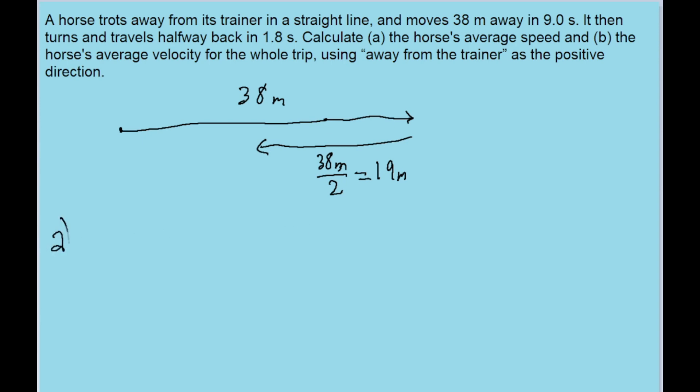Part A of the problem asks us to find the horse's average speed. So average speed is equal to total distance divided by the amount of time. Now the total distance in this case is going to be 38 meters plus the distance it travels when it turns around. So the total distance is 38 plus 19 meters, and the amount of time it travels, it takes 9 seconds for it to go the first length, and then it travels an additional 1.8 seconds when it turns back. So we put this into our calculator, then we find an average speed of about 5.3 meters per second.